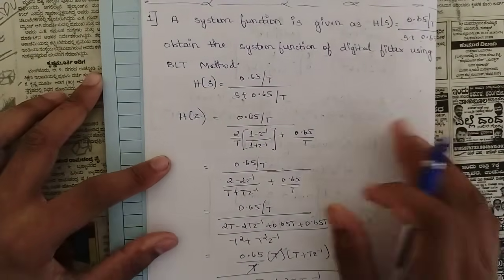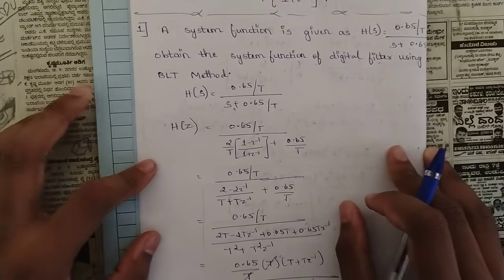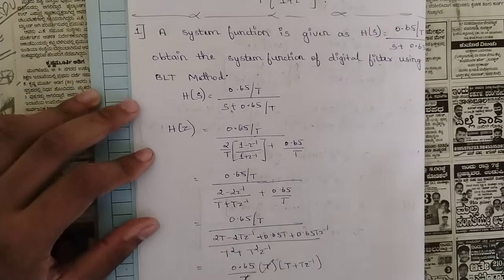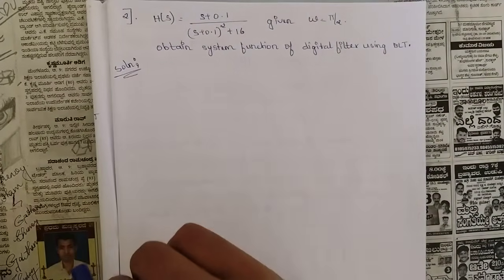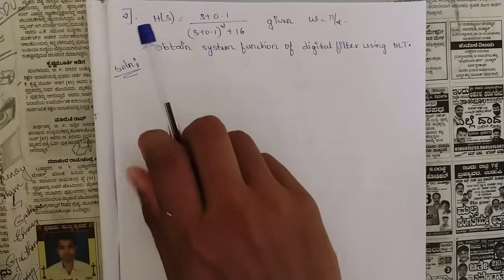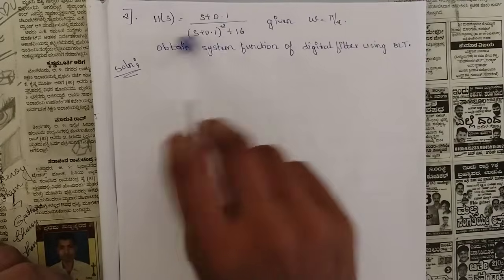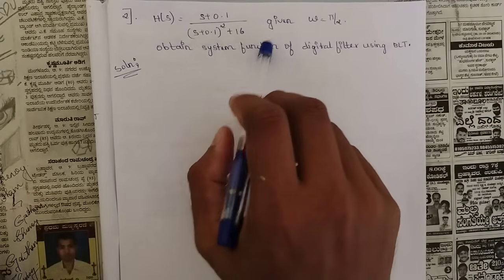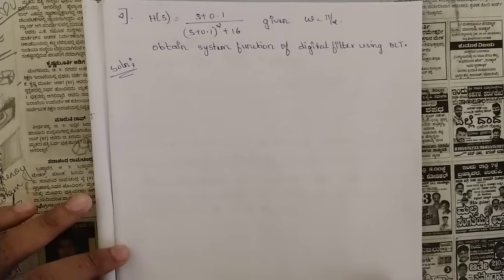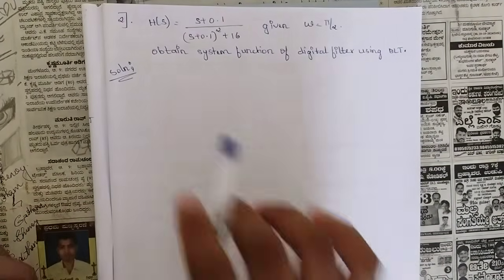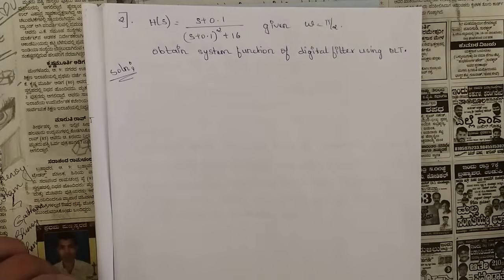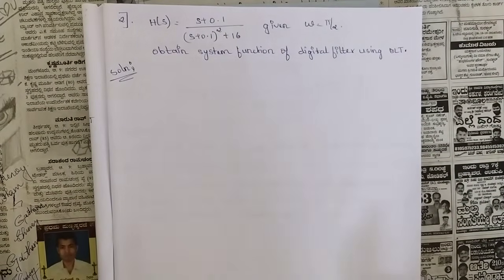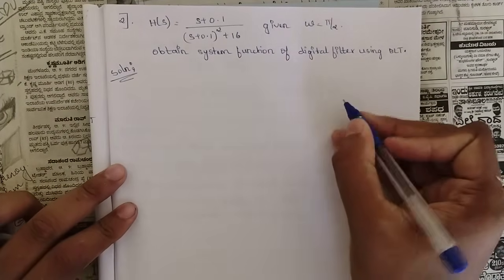This is how we solve the bilinear transformation method to go from H(s) to H(z). We should be thorough and quick in the calculation part. Now let us see the next problem. Here H(s) = (s + 0.1) / [(s + 0.1)² + 16], and they have given the value of omega equal to pi/2. We need to obtain the system function of the digital filter using the BLT method.